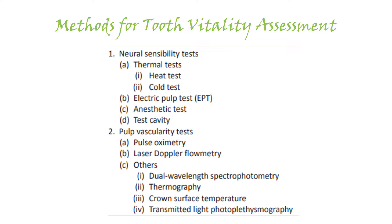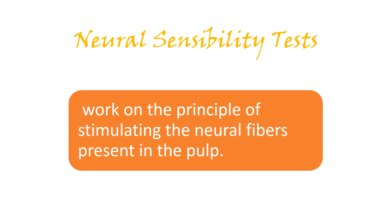There are two main test categories: neural sensibility tests and pulp vascularity tests. Neural sensibility tests assess the sensory response of the pulp, while pulp vascularity tests check whether a vital blood supply is present. Neural sensibility tests include thermal tests (heat and cold), electric pulp test (EPT), anesthetic test, and test cavity. Pulp vascularity tests include pulse oximetry, laser Doppler flowmetry, thermography, and transmitted light photoplethysmography.